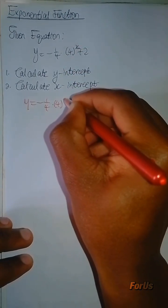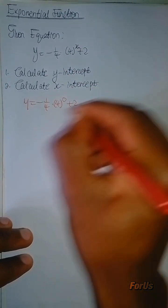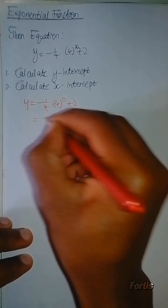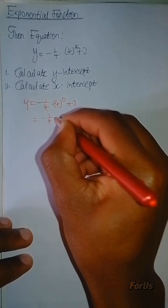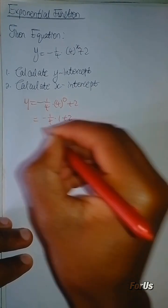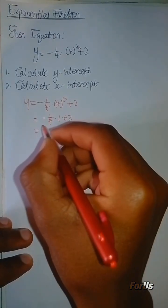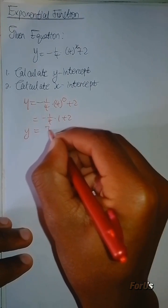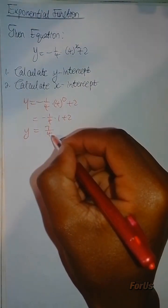For this x, you're going to substitute 0 plus 2, and it's going to be negative 1 over 4 multiplied by 1 plus 2. Since it's the power of 0, it's going to be 1, then the answer for the y-intercept will be 7 divided by 4.